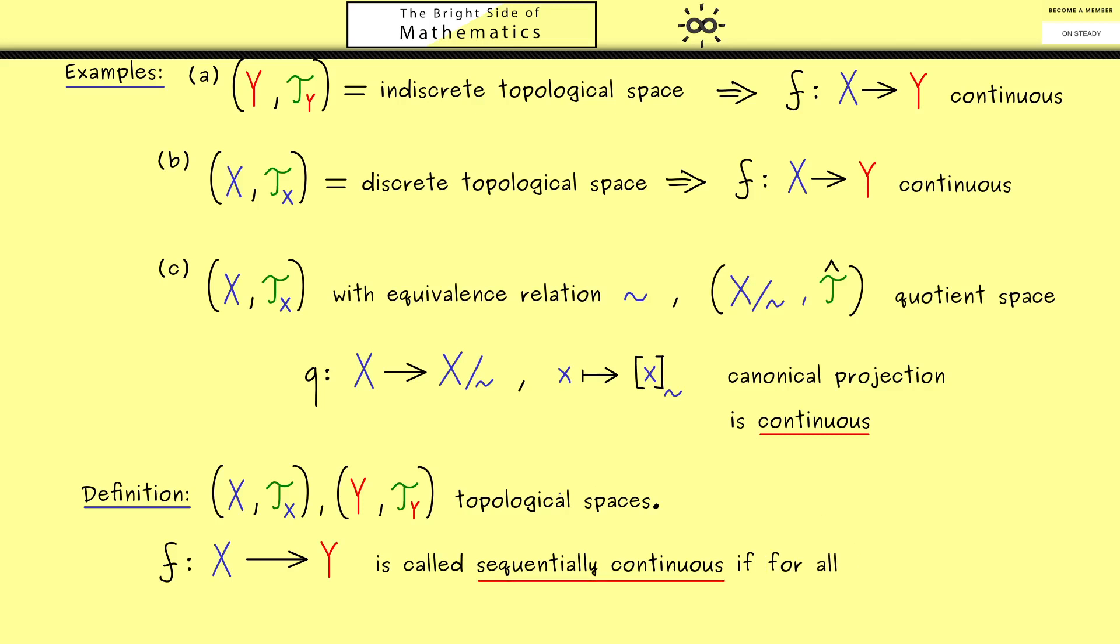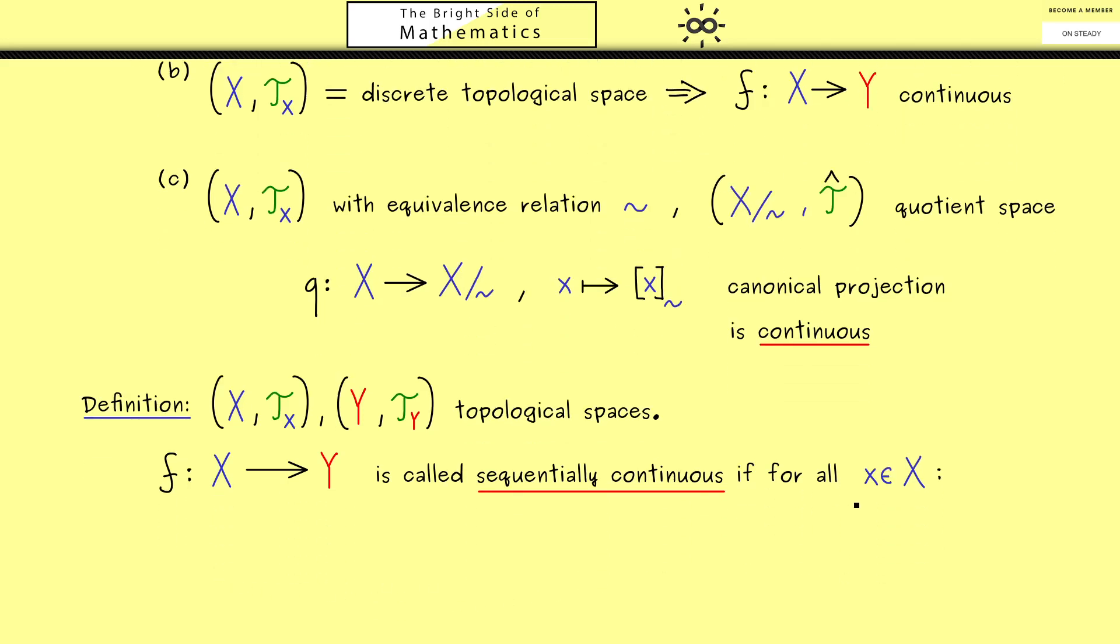And also this definition we can immediately formulate globally, so we take all points x in X. And then we just look at any sequence that converges to this point x. So let's call the sequence x_n and it should converge to x when n goes to infinity.